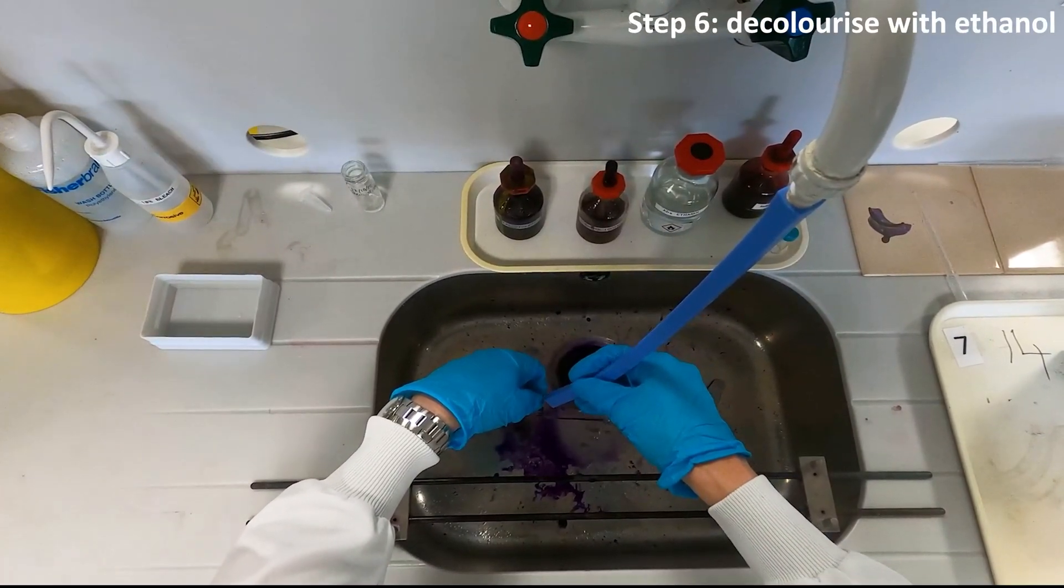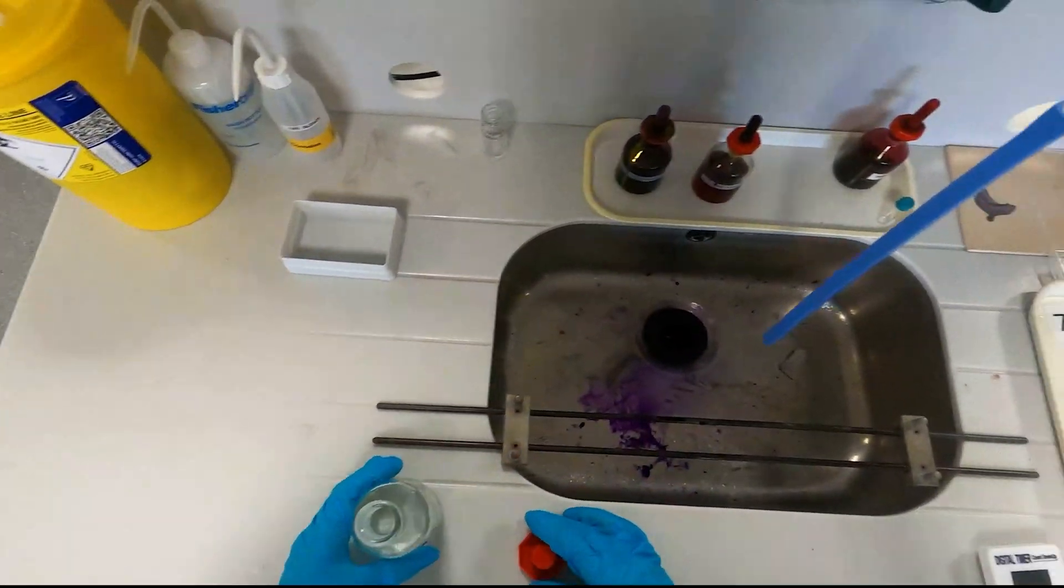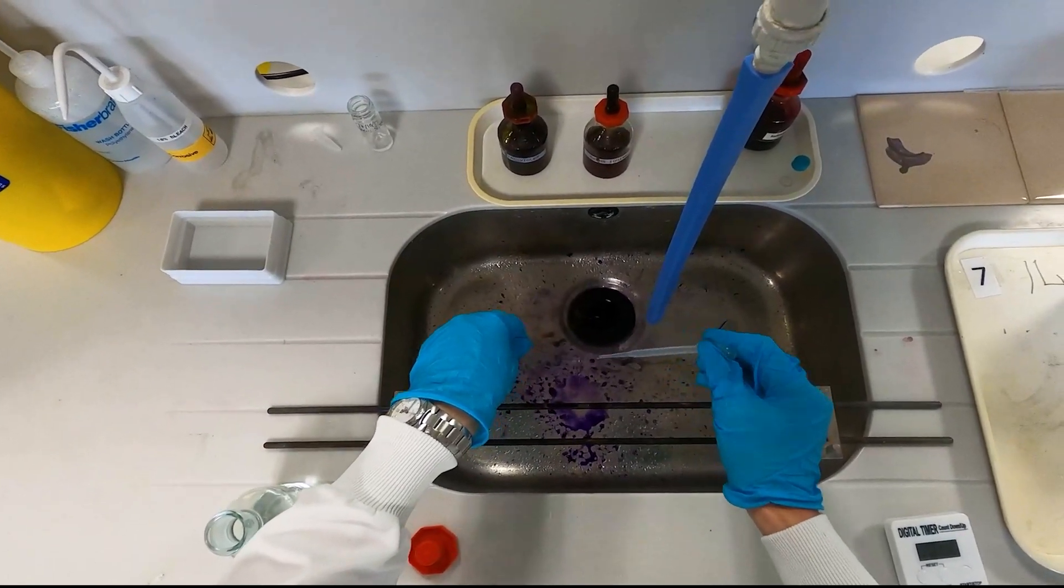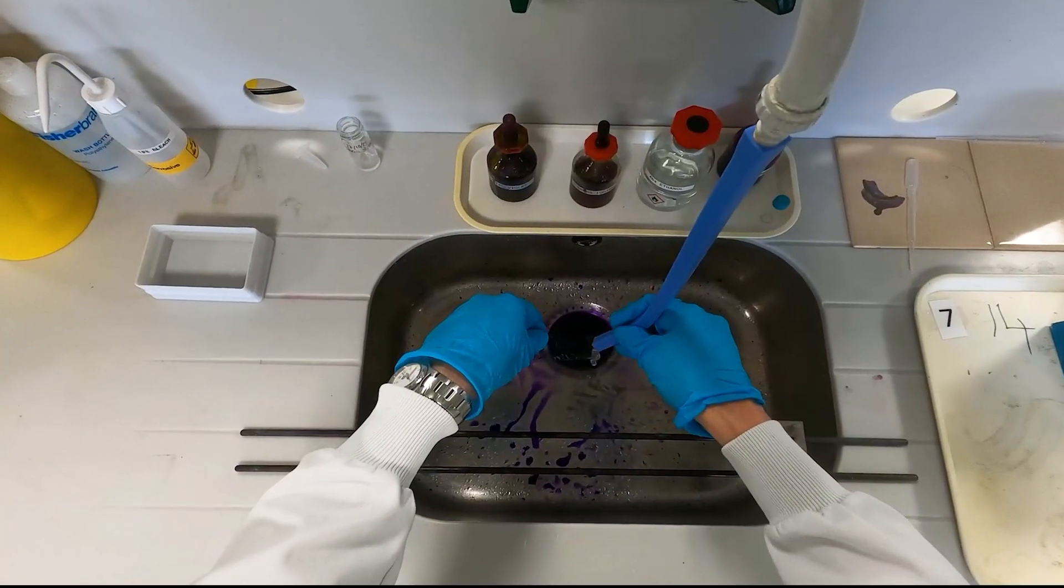Now it's time to decolorize with ethanol. This gets rid of any excess crystal violet still bound to the cells. Rinse the slide with ethanol until no more purple color runs off the slide. This should take around 10 seconds to do. Rinse under running water to get rid of any excess ethanol.